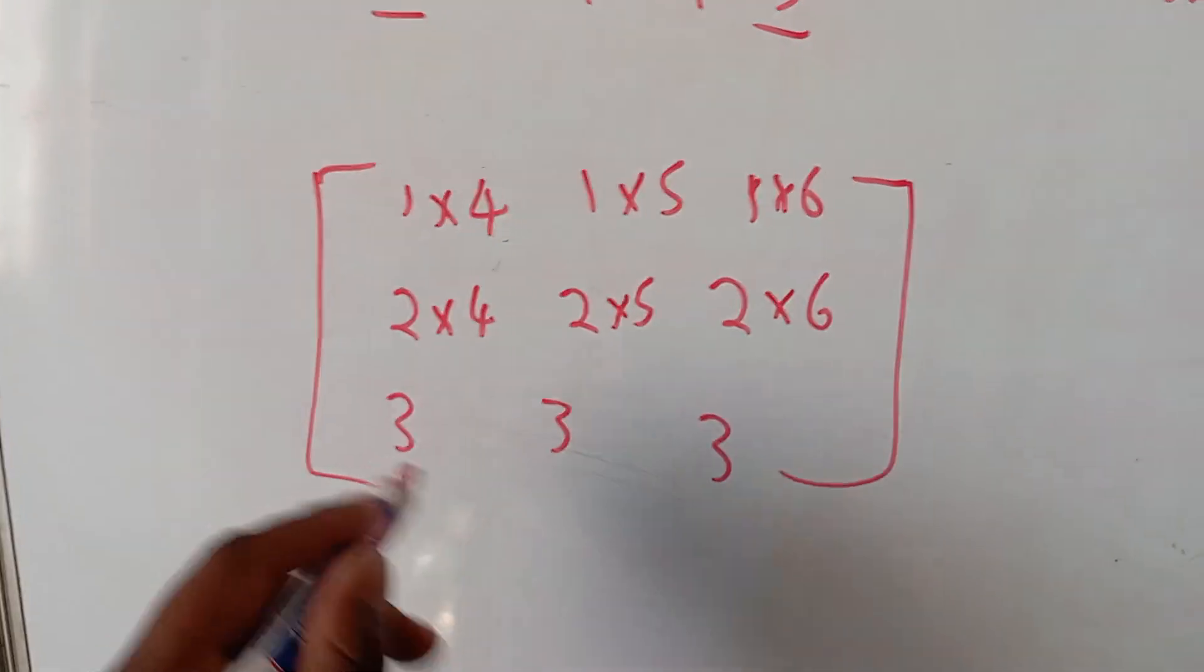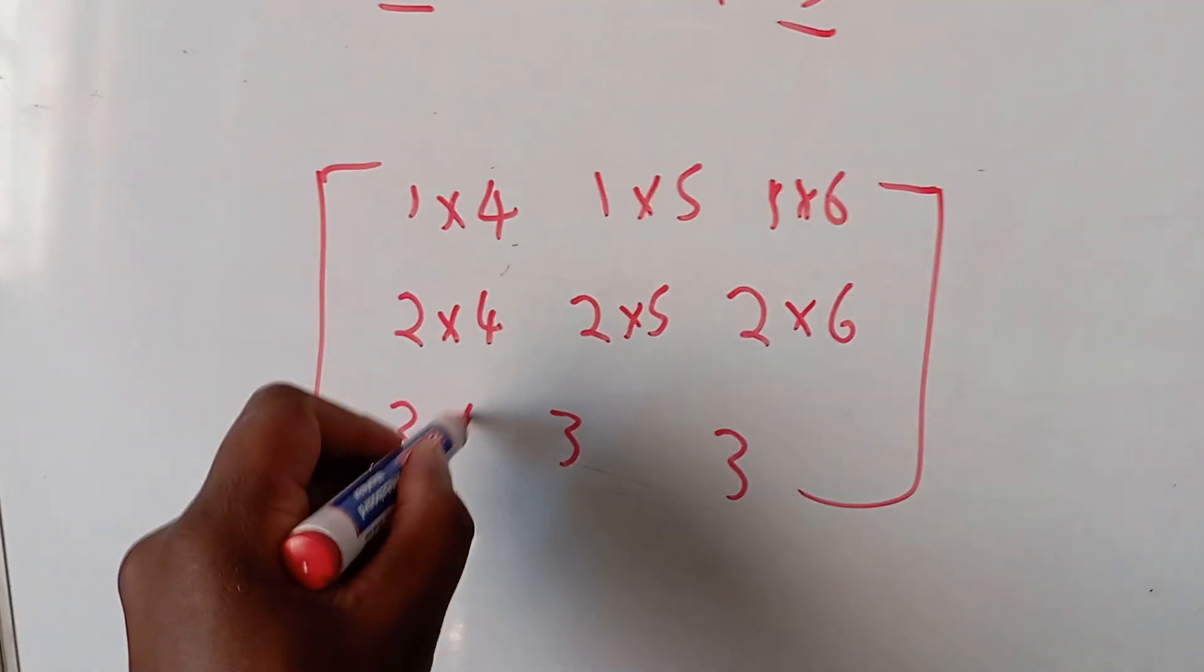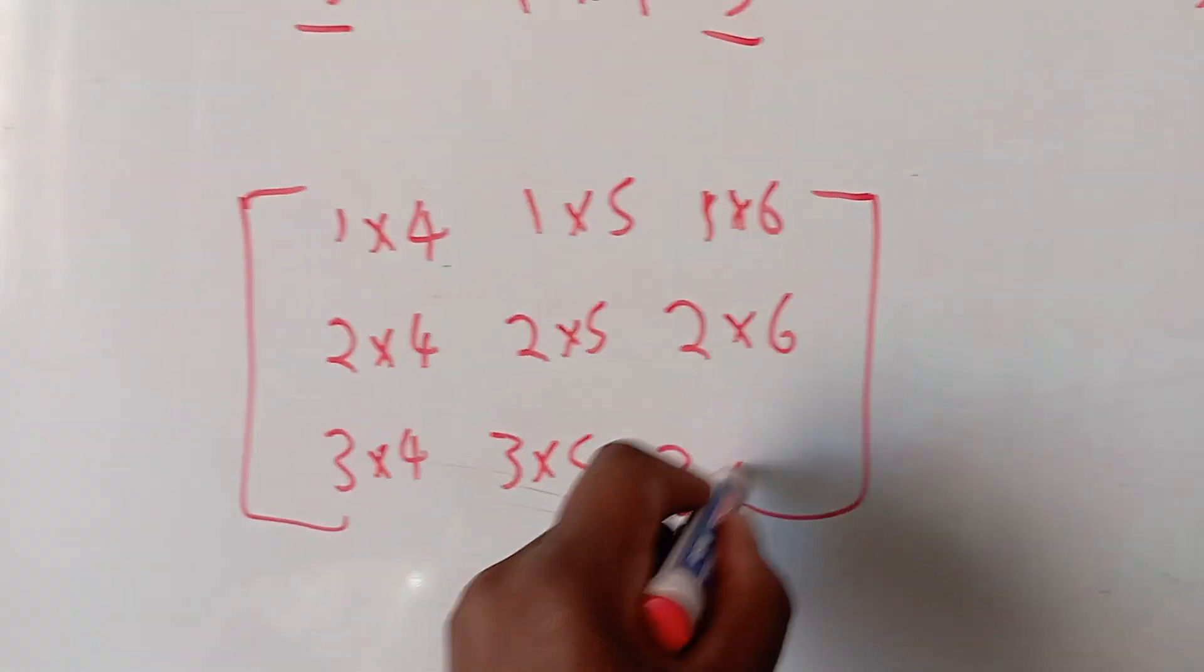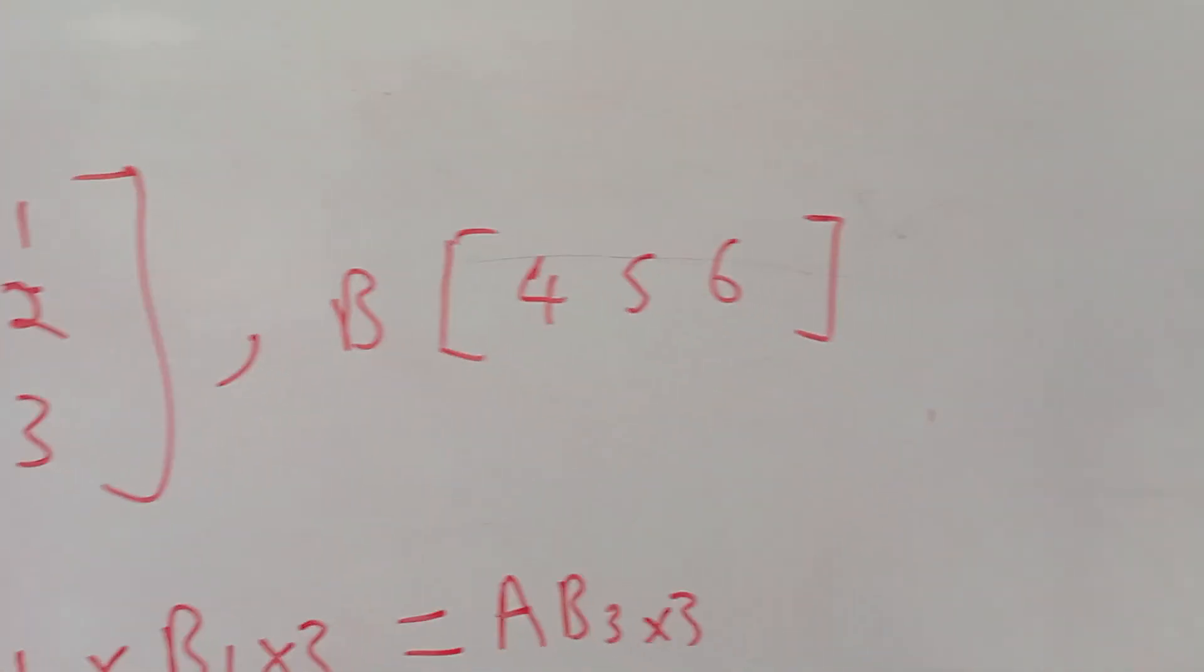Then we're going to have 3, so it's going to be 3 by 4, 3 by 5, 3 by 6, because we're multiplying by 4, 5, 6.